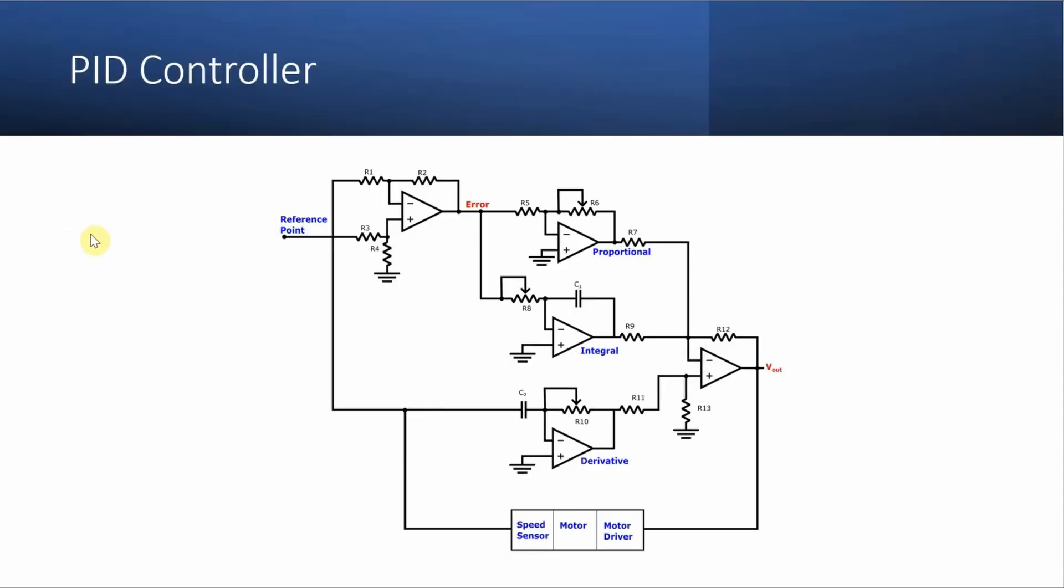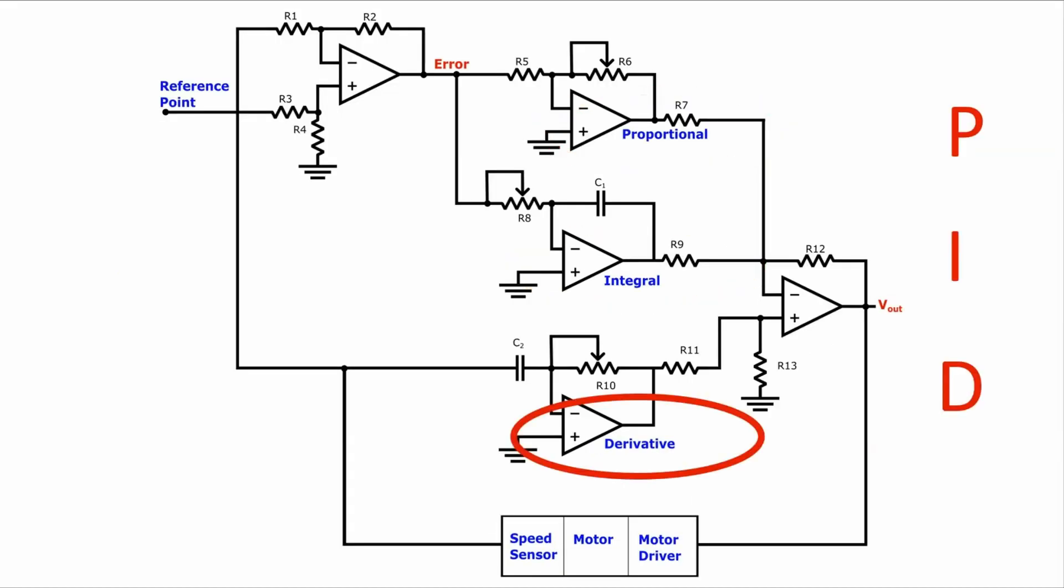One common use for the differentiator is part of a PID controller, where PID stands for proportional integral derivative. For the purpose of this video, we're not going to go into how the circuit works, but basically it uses feedback to help a motor follow a speed reference. Within that feedback loop, it uses a number of analog circuits. Most relevant to this video is that it uses a differentiator to take the derivative of the feedback voltage.